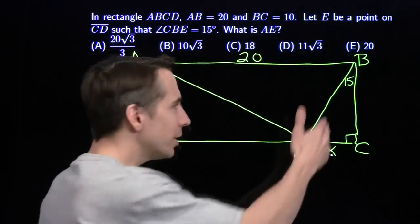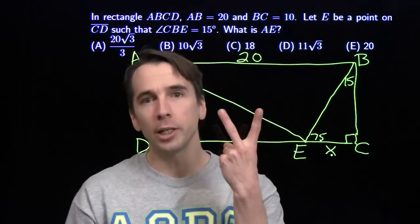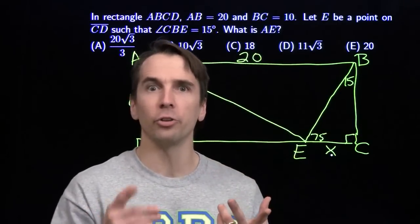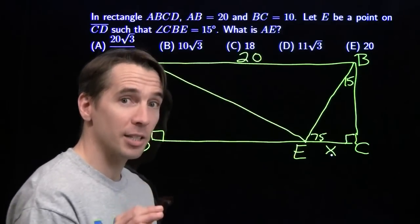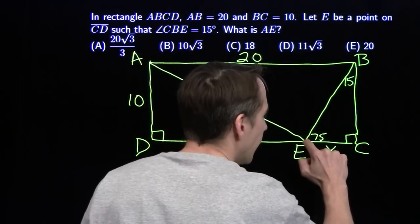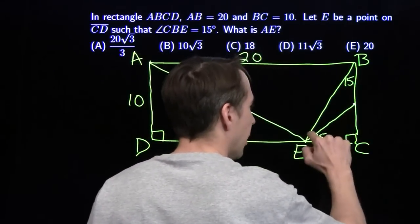So here's what we're going to do. We're going to take this confusing triangle that we really don't know how to handle. We're going to break it into two smaller triangles that we do know how to handle. We like 30, 60, 90 triangles. We like isosceles triangles.